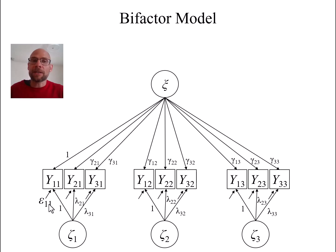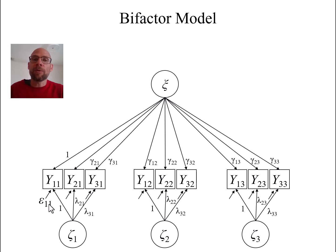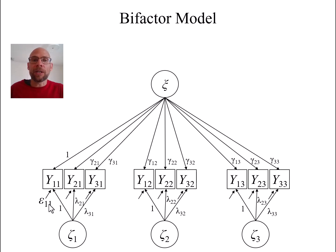Therefore, the variance of each observed variable can be decomposed into variance due to the general factor, variance due to the specific factor, and error variance. For example, in the context of latent state-trait analysis with longitudinal data, you can determine what proportion of the observed variance reflects trait effects, what proportion represents occasion-specific effects, and what proportion is measurement error. This lets you examine whether subjective well-being is a more trait-like or more state-like construct.